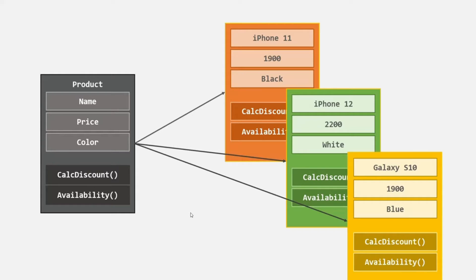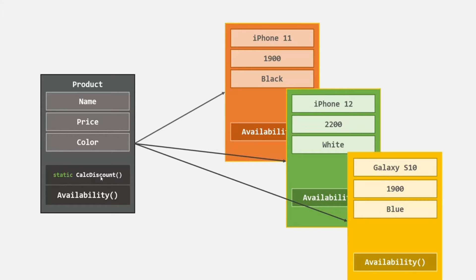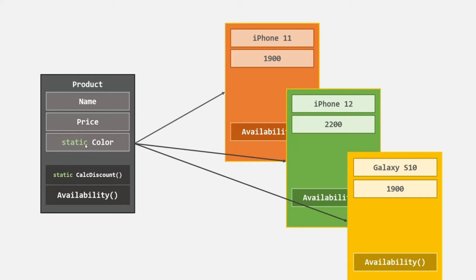Whenever we make a property or a method static, in that case we will have only a single copy of that method or property. For example, let's say we have made the calc discount method a static method. Now, whenever we create an instance of this Product class, that instance will not have a copy of this calc discount property, as you can see here.